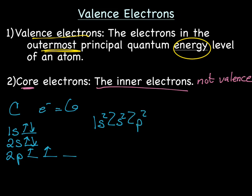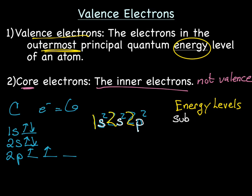Let's go over a quick reminder. The 1, the 2, and the 2 in the configuration represent energy levels. The s, the s, and the p are sublevels. And the superscript 2, 2, and 2 are the electrons.